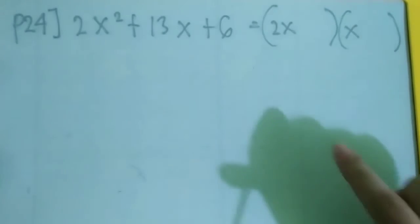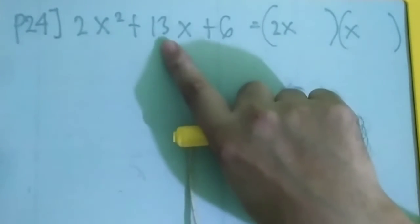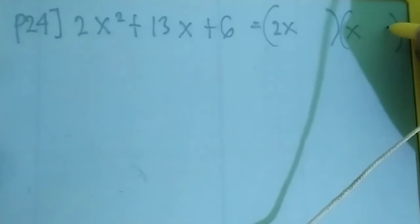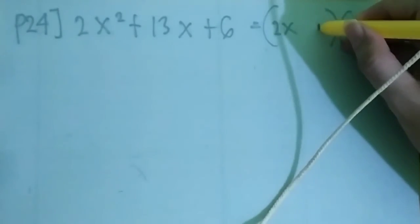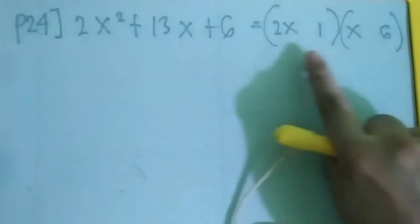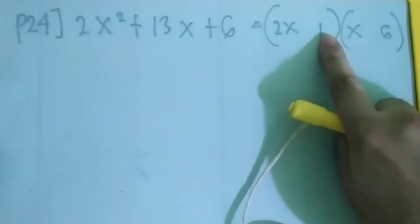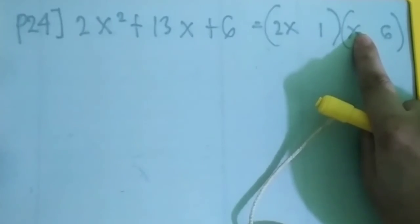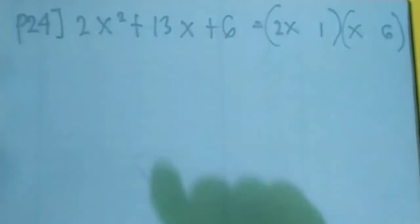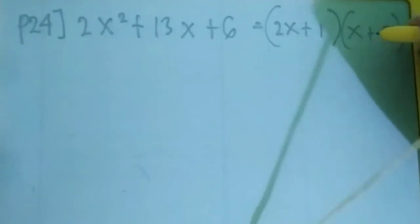We use 6 and 1 because 2 times 6 is 12, plus 1 is 13. So 6 times 2 gives 12x, plus 1x equals 13x. Both signs are positive, so the answer is positive.